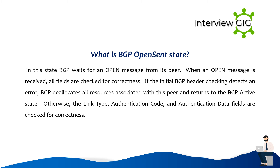What is BGP OpenSend state? In this state, BGP waits for an open message from its peer. When an open message is received, all fields are checked for correctness. If the initial BGP header checking detects an error, BGP deallocates all resources associated with this peer and returns to the BGP active state. Otherwise, the link type, authentication code, and authentication data fields are checked for correctness.